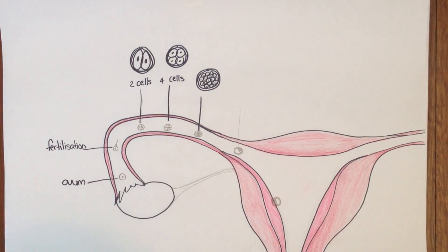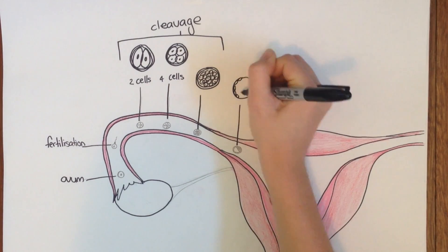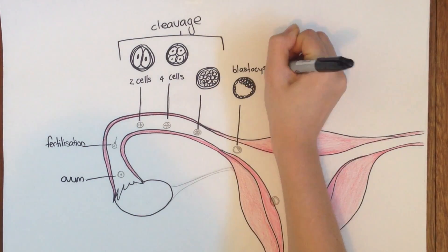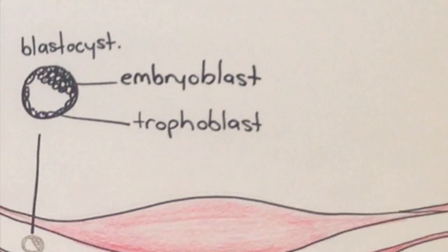At the 32 cell stage, the developing mass is called a blastocyst. A blastocyst is a hollow ball of cells differentiated into a trophoblast and an embryoblast. It is still about the same size as the original zygote.